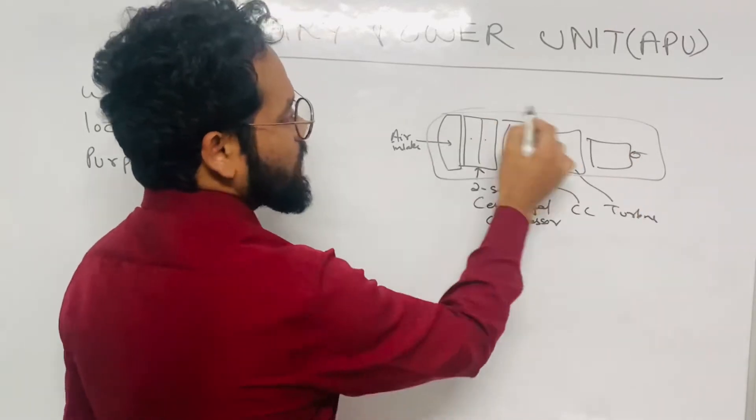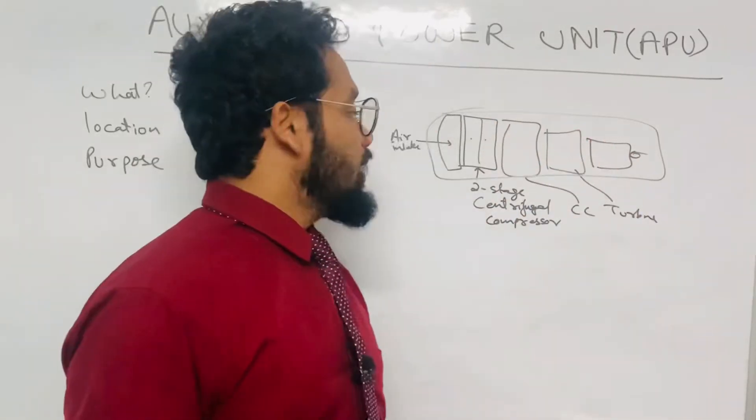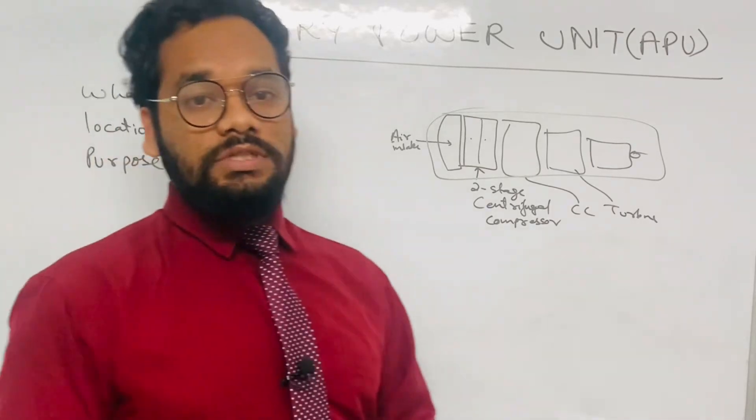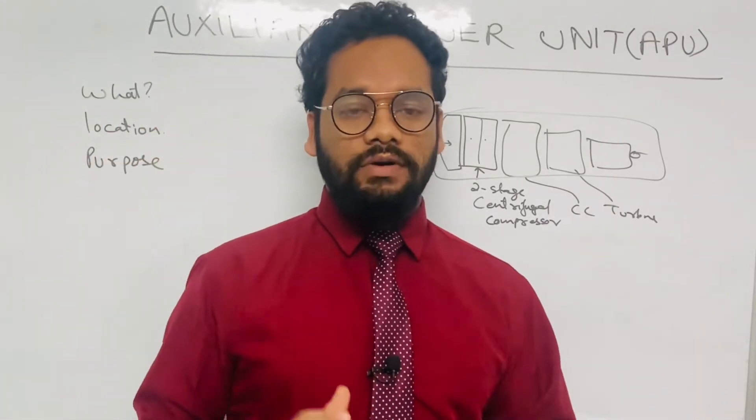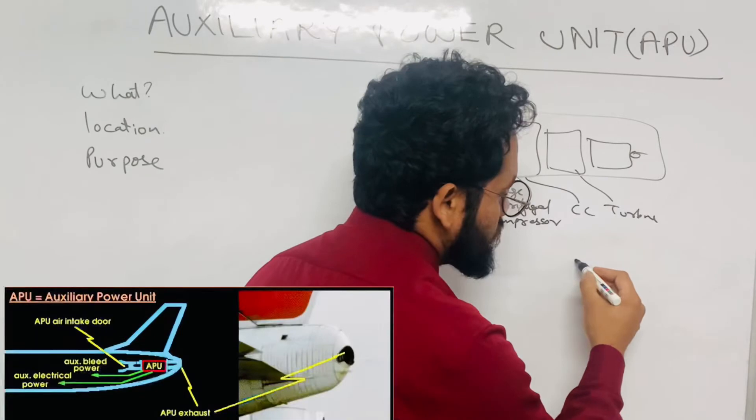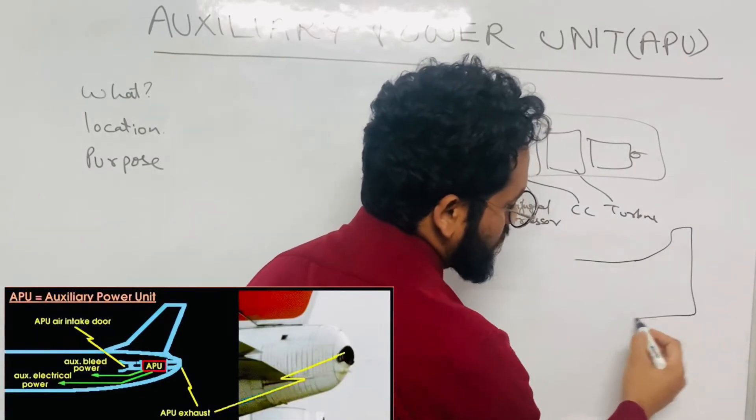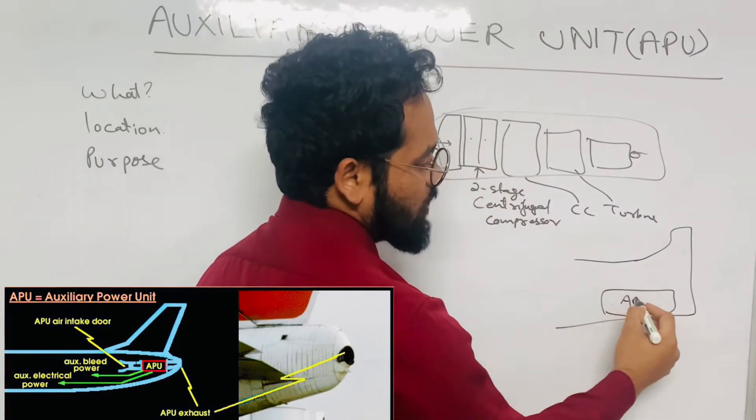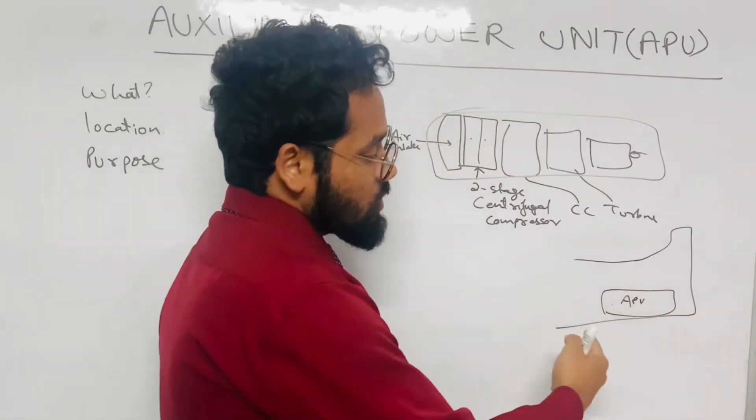So this is the basic about APU. And what is its location, friends? The location of APU is in the tail cone of the aircraft. Like suppose this is an airplane and this is its tail cone, so here the APU is mounted. So this is the location of APU.